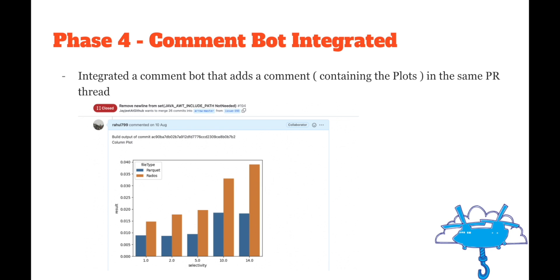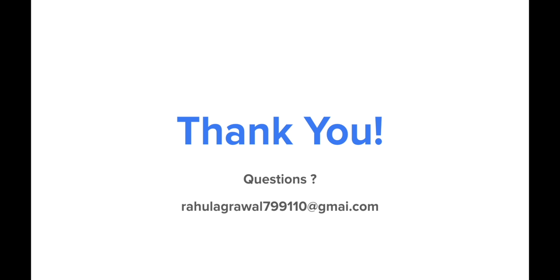Let me briefly summarize the whole workflow. A GitHub Action build is triggered whenever a contributor raises a PR in the main SkyhookDM repo. The main job of the workflow is to build the latest SkyhookDM Docker image with all the contributor's changes. Once finished, it triggers another build in the benchmarks repo using Webhooks, where all the benchmark tests are executed with ConBench and all JSON outputs are stored in a well-structured format. Once all results are available, Python scripts generate the plots, which are further utilized by the command bot. I hope I explained it well. You can reach me at my email address mentioned in this slide. Thank you everyone.